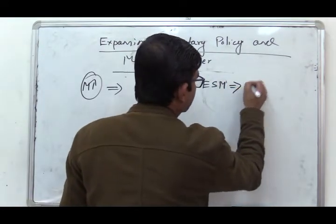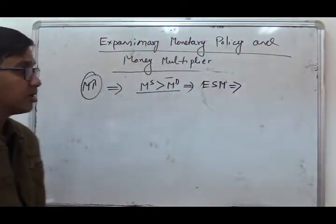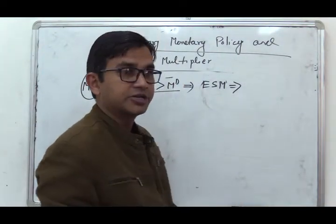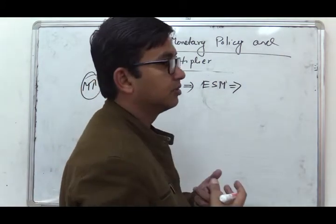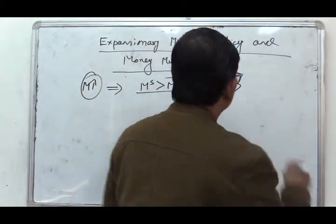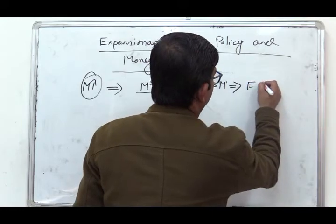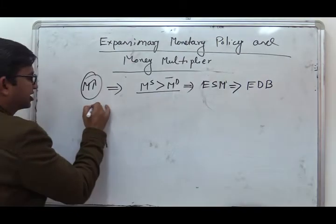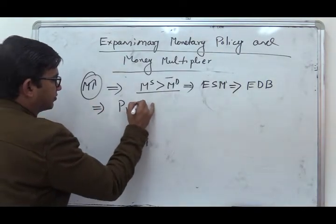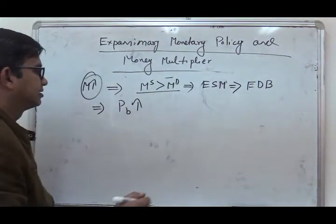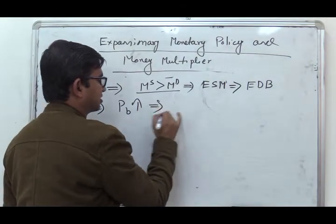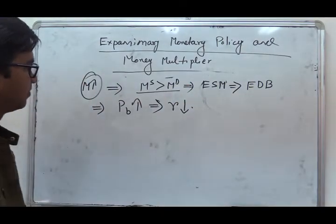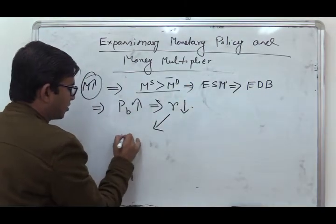This excess supply situation in the money market means people have more money in their hands. They will try to purchase bonds to get rid of the extra money, creating excess demand in the bond market. Consequently, bond prices will start to rise, and whenever bond prices rise, the rate of interest will start to fall.